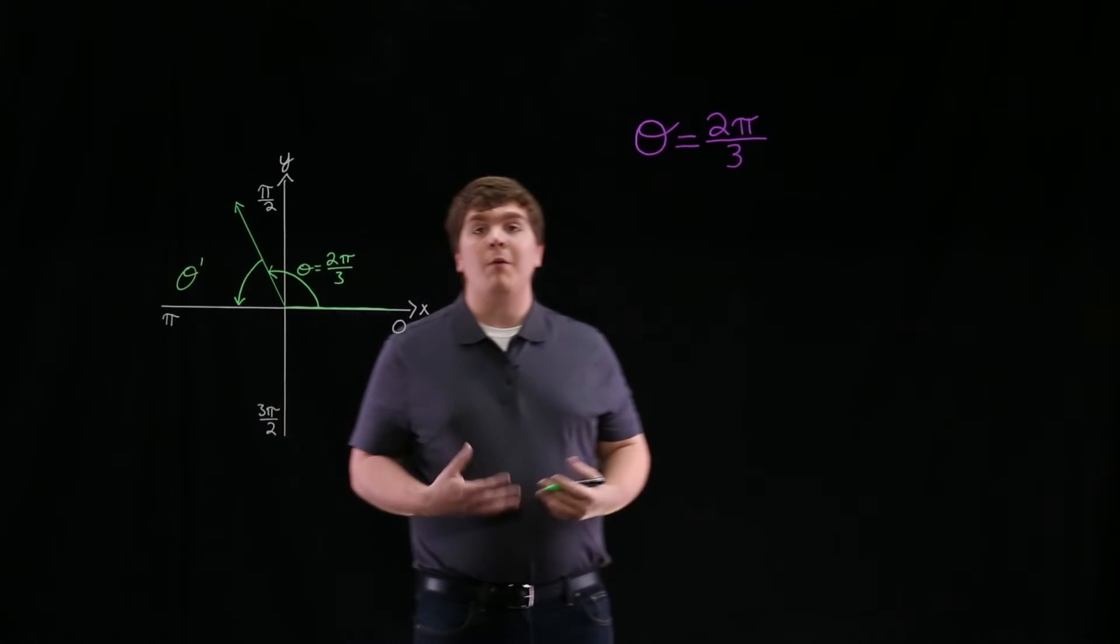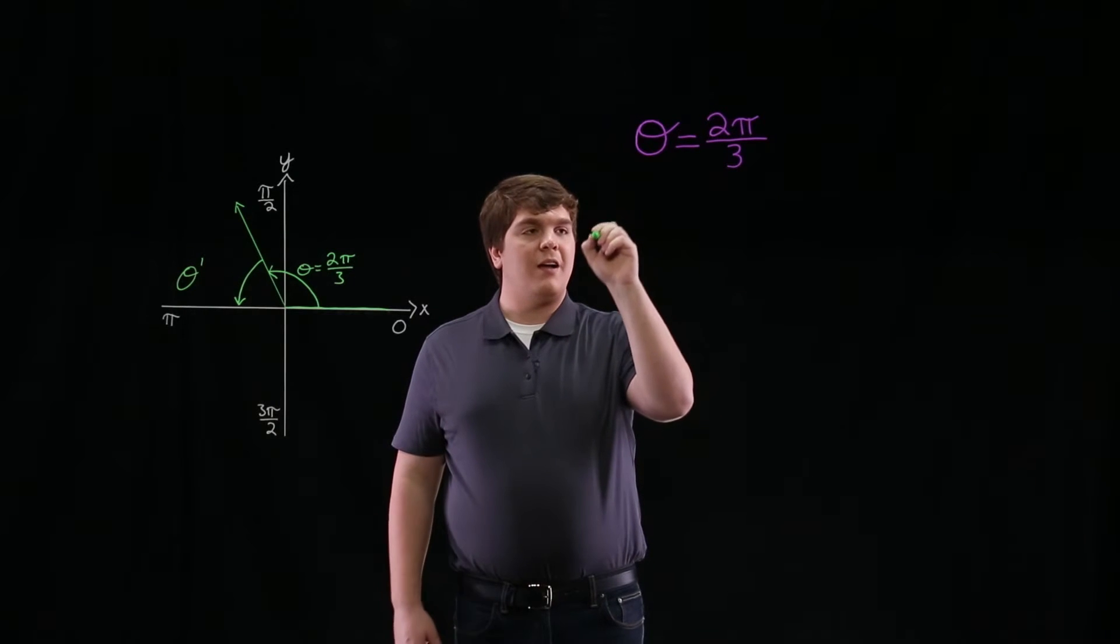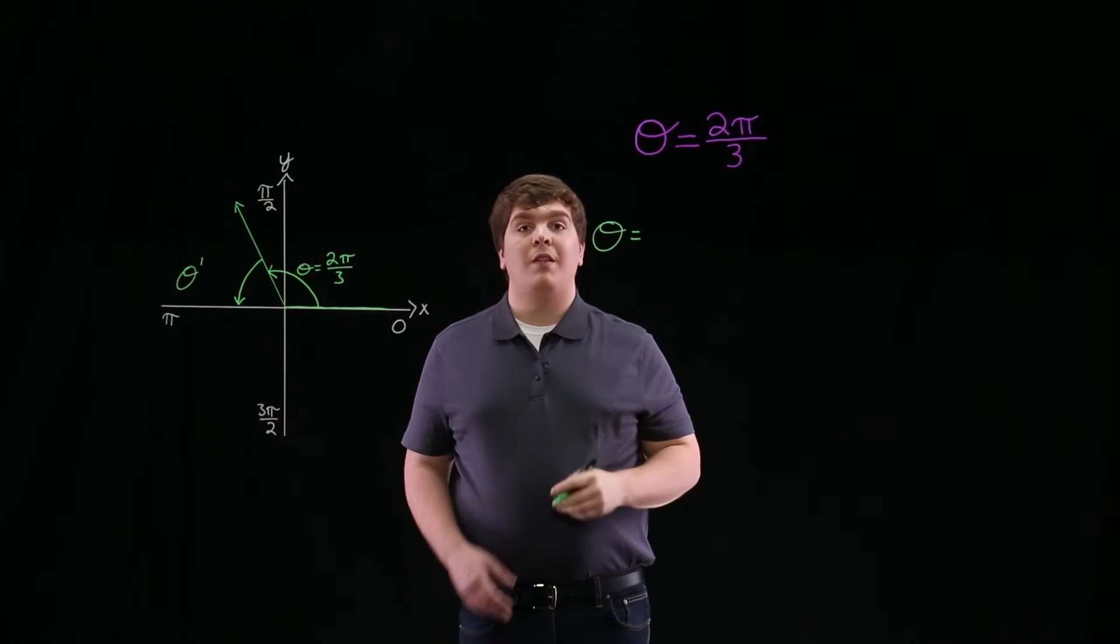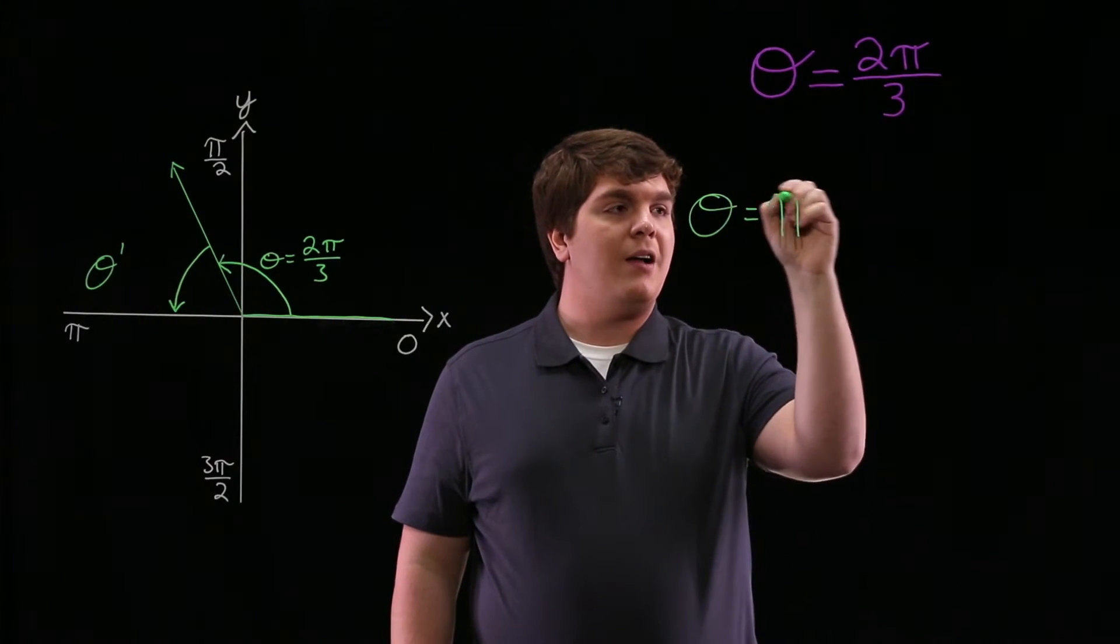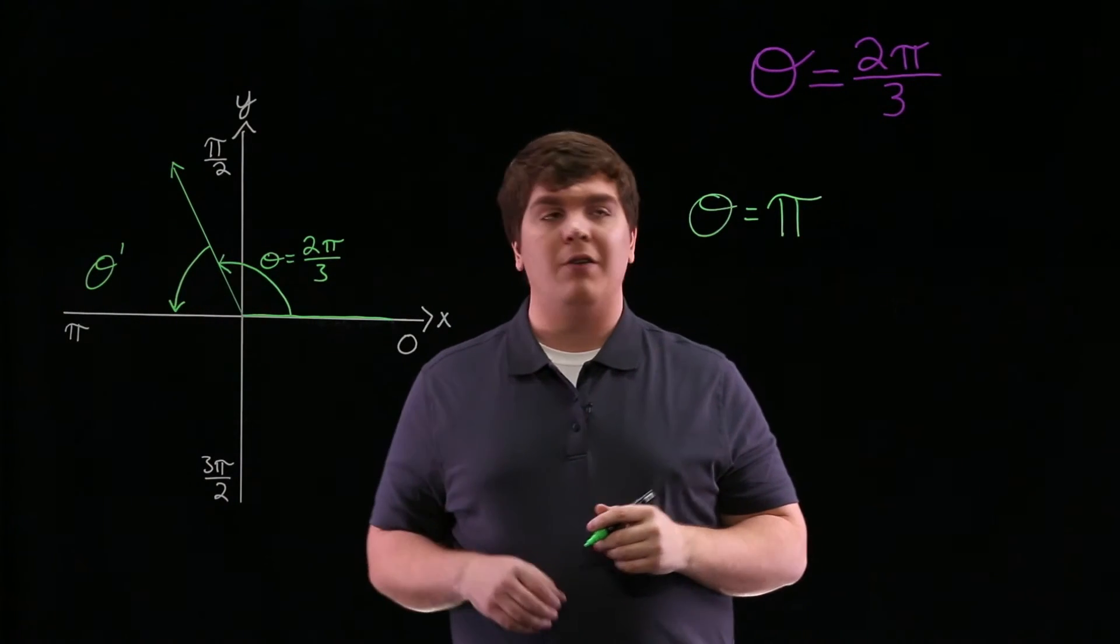So in order to find theta prime, what we need to find is the angle that gives us the closest x-axis, which in this case is π, minus our angle theta.